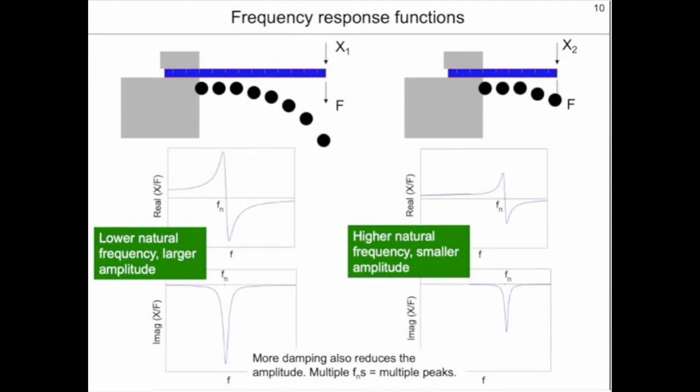On the right, we see the shorter, stiffer ruler. Its frequency response function is also shown below it. The difference between these two is that the shorter ruler has a higher natural frequency and a smaller amplitude because it is stiffer. More damping would also reduce the amplitude. And one thing we observe in measured frequency response functions is that multiple natural frequencies will give multiple peaks.